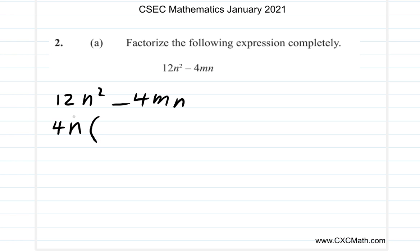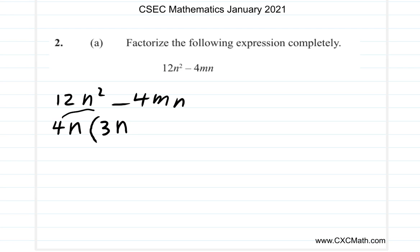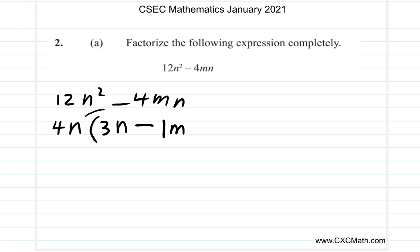Open bracket. 4 times what you're going to put here will be 12 — it's going to be 3. Then n times what you're going to put here is going to be n squared, so what you're going to put is n. So if you multiply with the bracket: 4 by 3 is 12, n by n is n squared. Minus: 4 times this, you're going to put 4, so it's going to be 1. And it's m. n times what gives you n? It's 1. So let's rewrite this — without the 1s, it's 4n open bracket, 3n minus m.